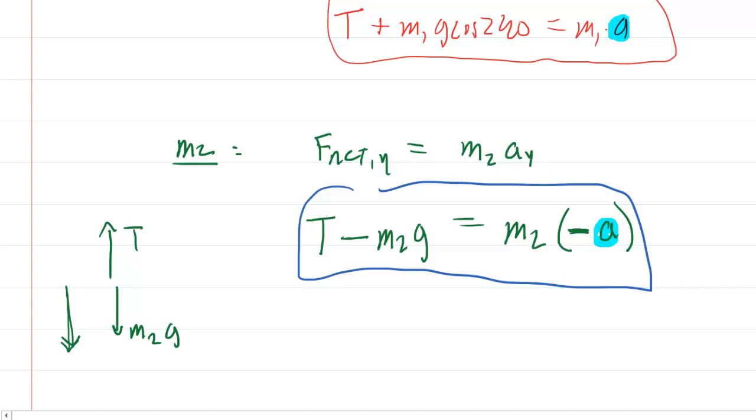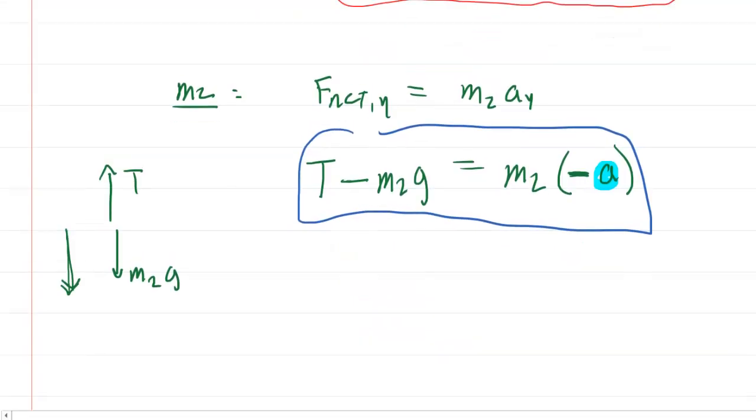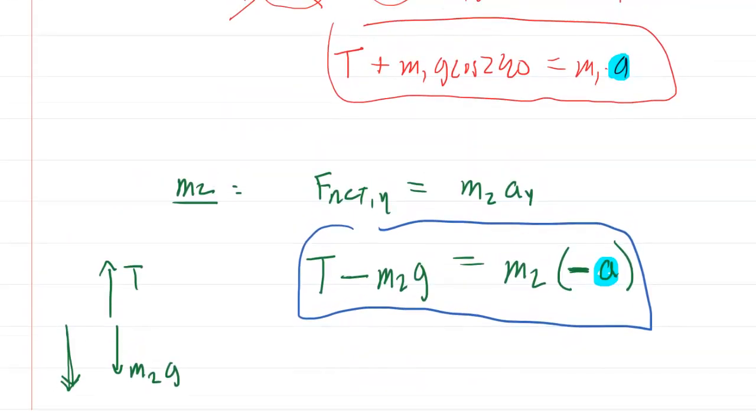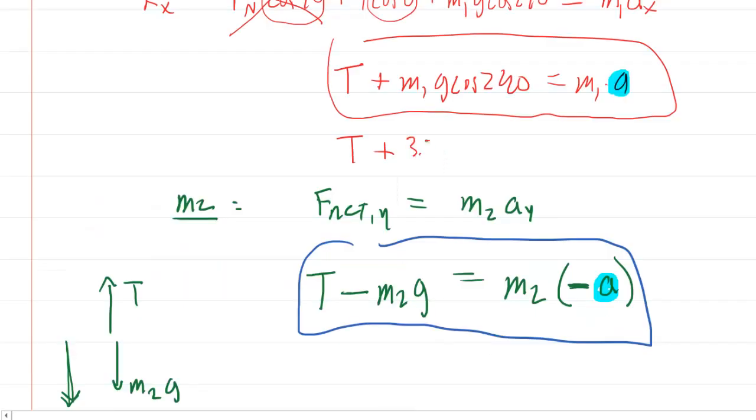And now we're going to be able to solve for part A and C. Actually, all the parts here. Let's go and find the magnitude of the acceleration for each block. We're going to be doing this by plugging in the known values. So let's return to the first equation. We have tension plus M1. That was the mass of block 1, which was 3.7 kilograms. So we'll have 3.7 times G, which is 9.8, times cosine of 240, equals the mass of 3.7 times A. Let's pick up our calculators and multiply 3.7 by 9.8 by cosine of 240. And you would get T minus 18.13 equals 3.7A.